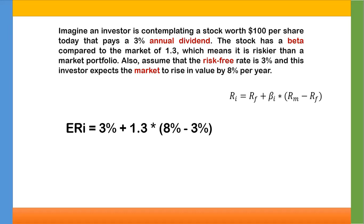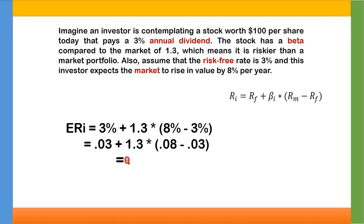Now we have to find out RM. RM is the expected market return on investment, which the investor expects the market to rise by 8% per year. So the formula becomes: ERI = 0.03 + 1.3 × (0.08 − 0.03). Converting percentages to decimals for accuracy: 3% becomes 0.03, 8% becomes 0.08. The result is 0.095, or 9.5%.